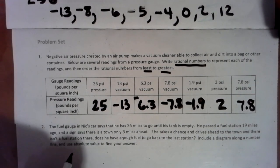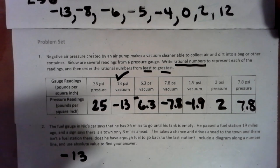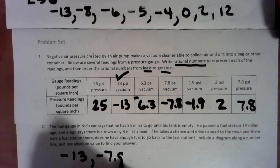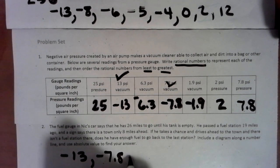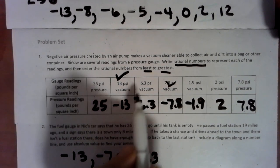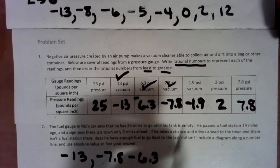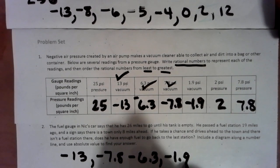So worst thing we could get looks like negative 13. And then we have negative 7.8. And then we have negative 6.3. And we got negative 1.9.